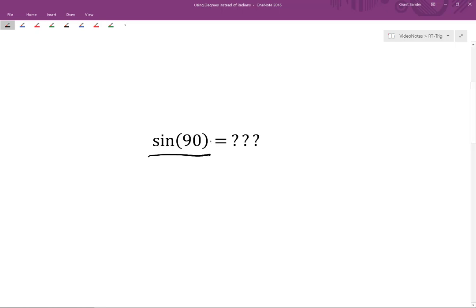Most calculators by default work in radians, so sine of 90 would give us the output of sine when the input is 90 radians, but we were thinking about 90 degrees.